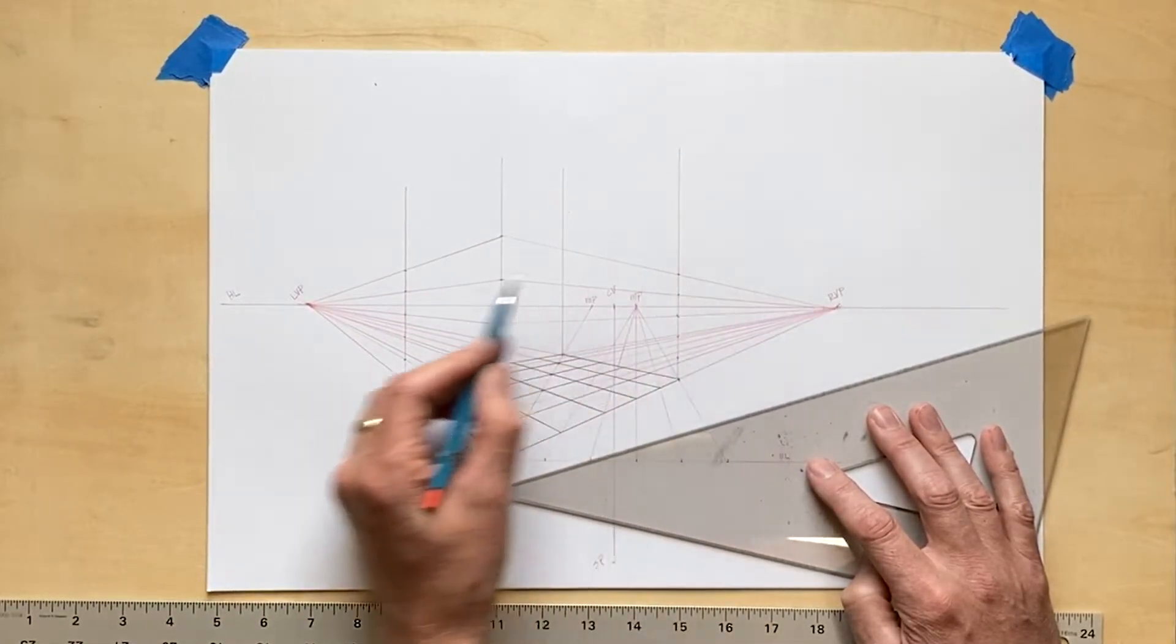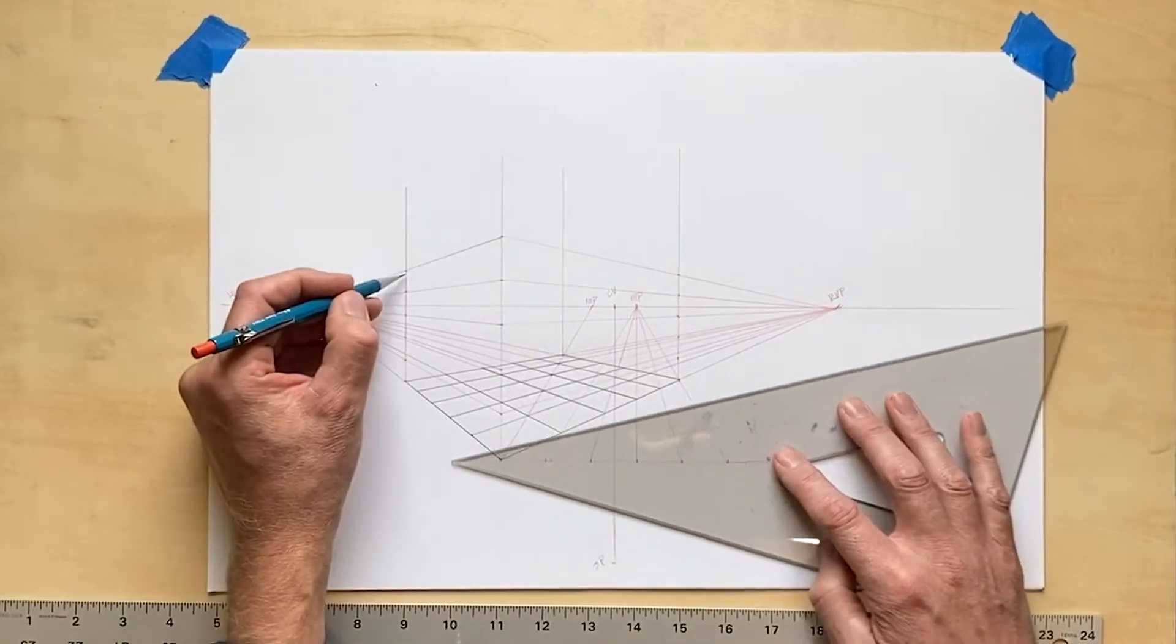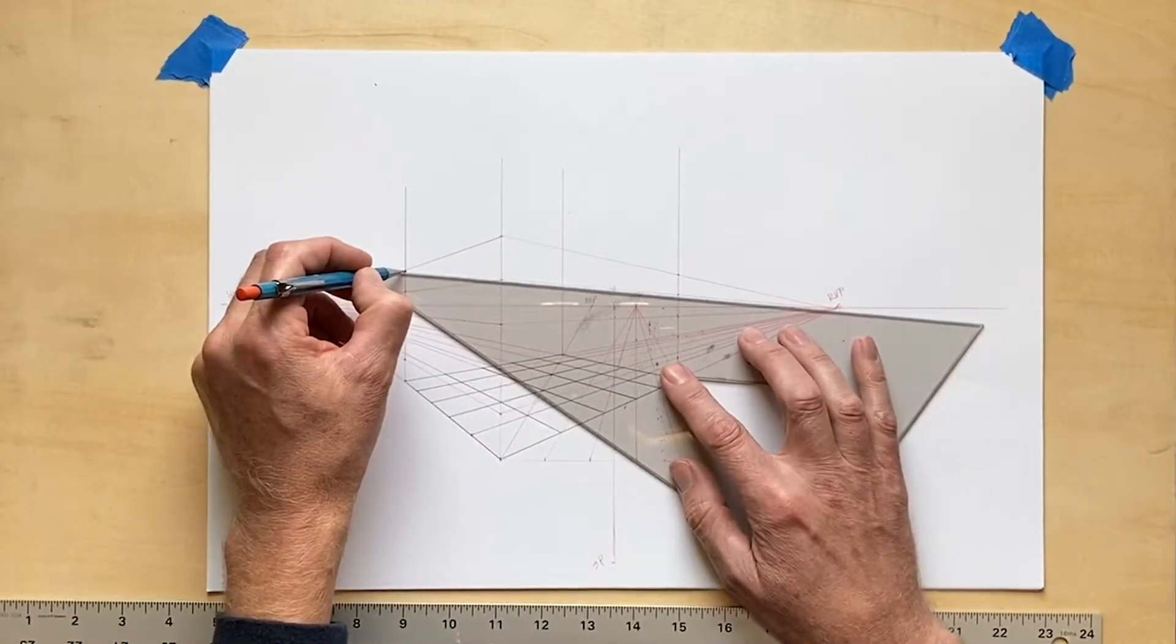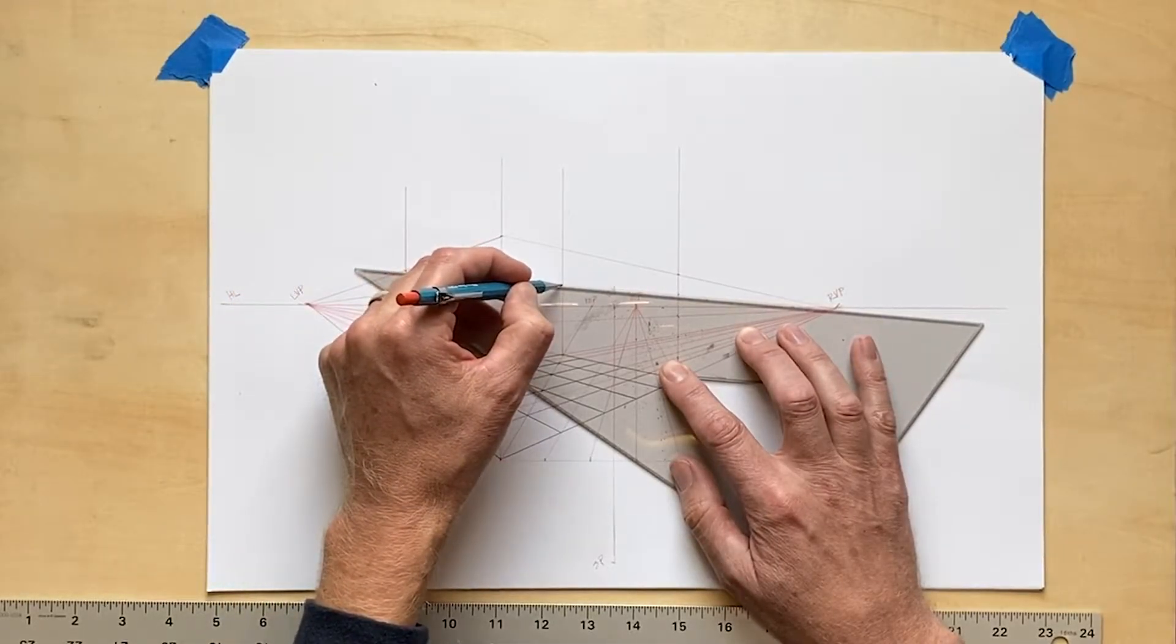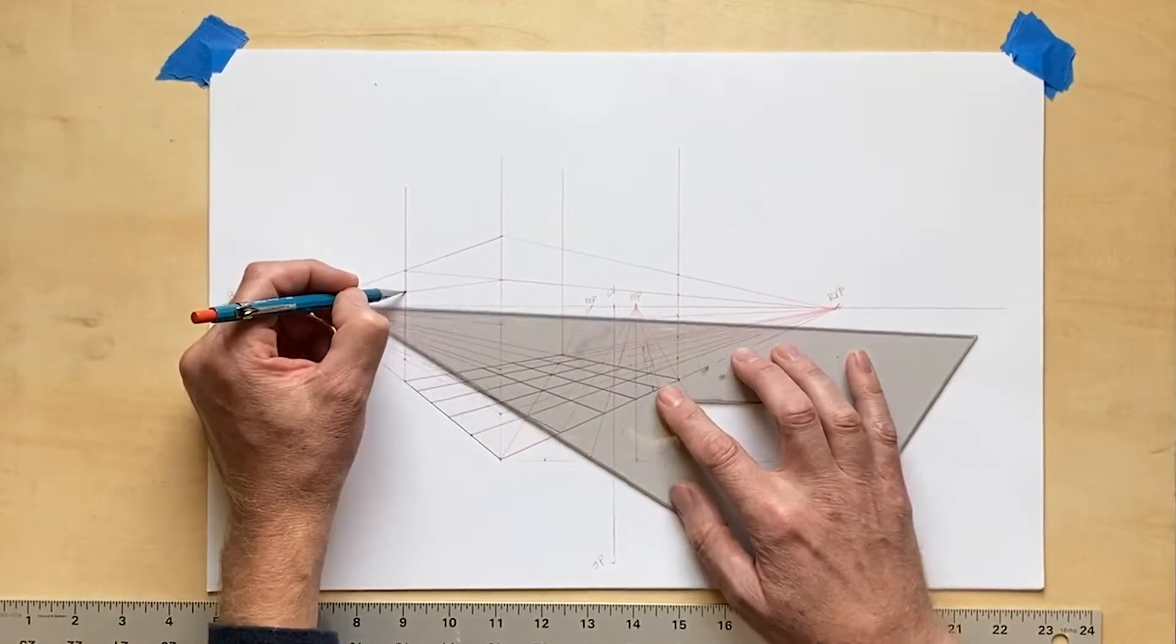I want to connect those back elevation lines now to opposite vanishing points, so the left back elevation line will have points that connect to the right vanishing point and vice versa for the other side.